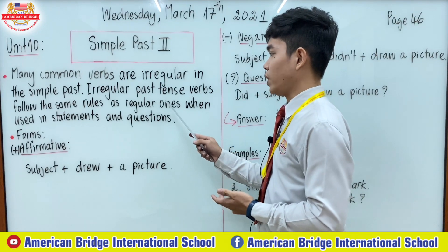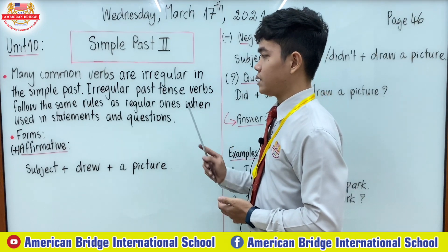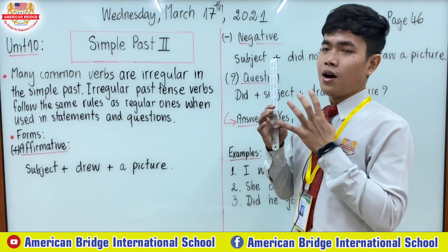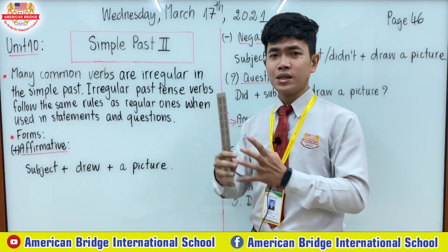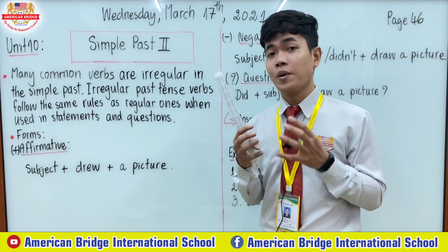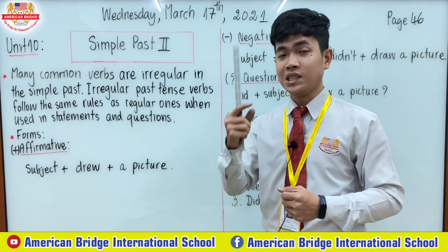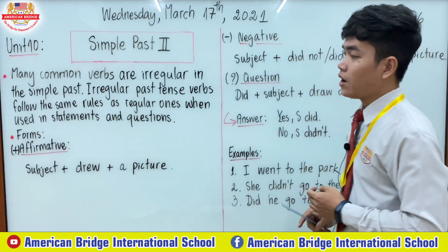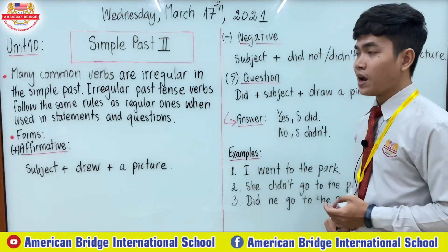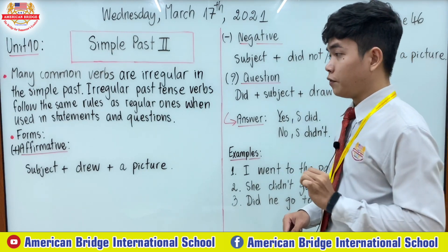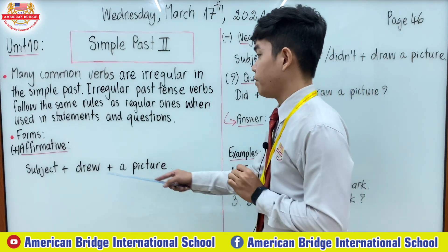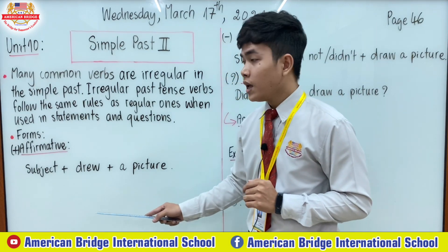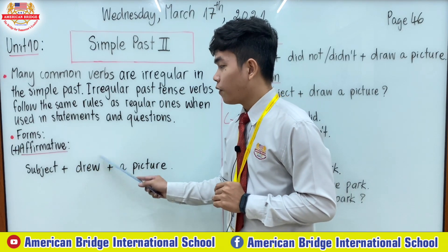Irregular past tense words follow the same rules as regular ones when used in statements and questions. So the usage of Simple Past 1 and Simple Past 2 is the same — the difference is only about the irregular verb. Now let's look at the three main forms: affirmative, negative, and question. For the affirmative form, we have subject plus verb 2.